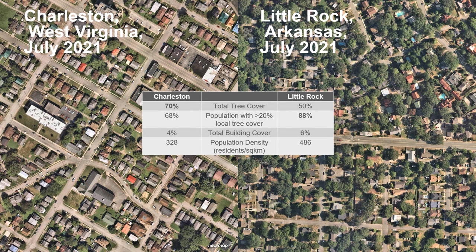Going back to Charleston and Little Rock — they are in fact both leaders in tree cover for two different reasons. Charleston has a whopping 70% total tree cover within the city limits. Little Rock has 50% total tree cover. However, the way the population and the trees are distributed means that 88% of the population in Little Rock is living in a leafy census block, compared to only 68% in Charleston. The make-up of the city is not just how many trees and buildings there are, but how they're mixed together.